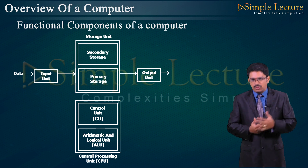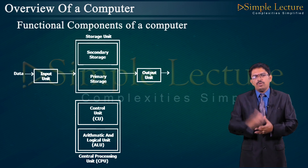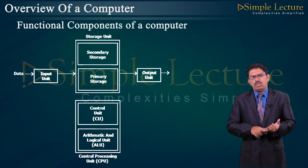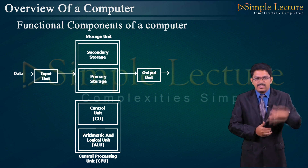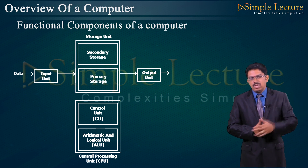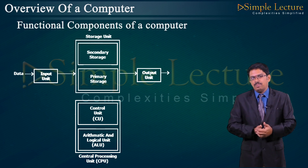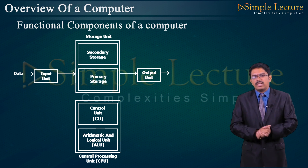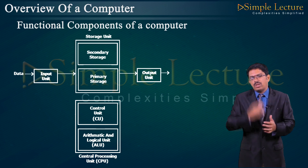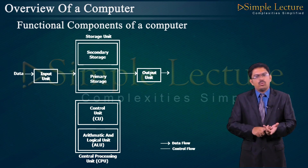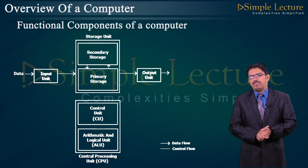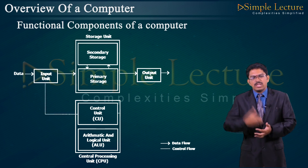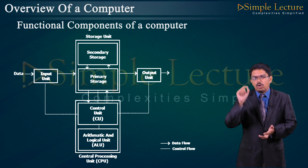Information is displayed as output on the screen. The storage unit consists of secondary storage and primary storage. Primary storage is built-in storage; secondary storage consists of external devices such as pen drives and hard disks. The CPU consists of a control unit and an arithmetic logic unit. There are two types of flow: data flow (continuous flow between two devices) and control flow (which controls all operations, indicated by dotted lines).